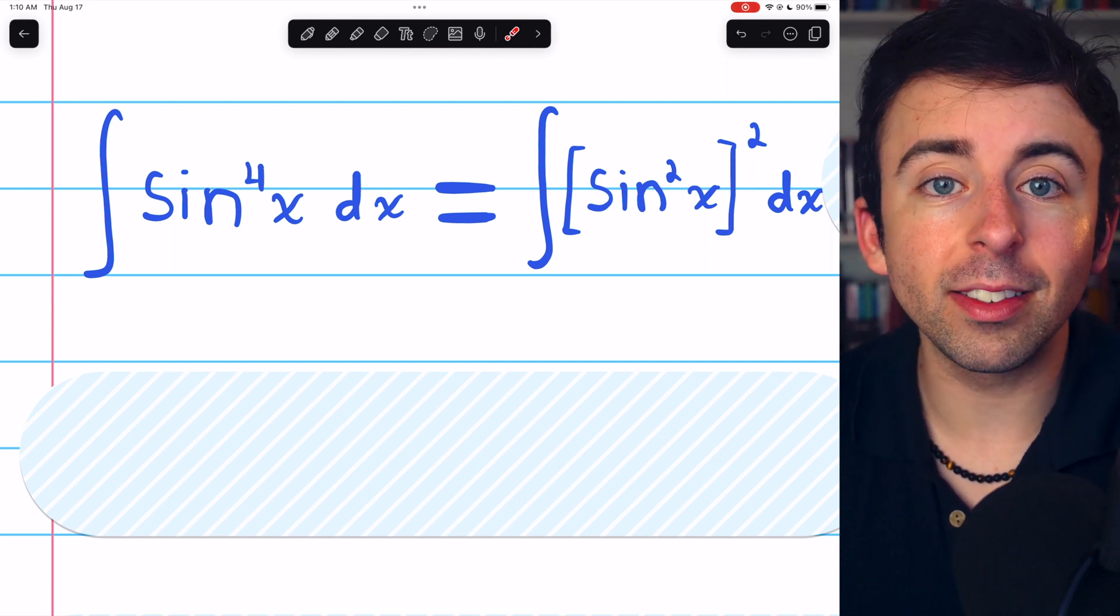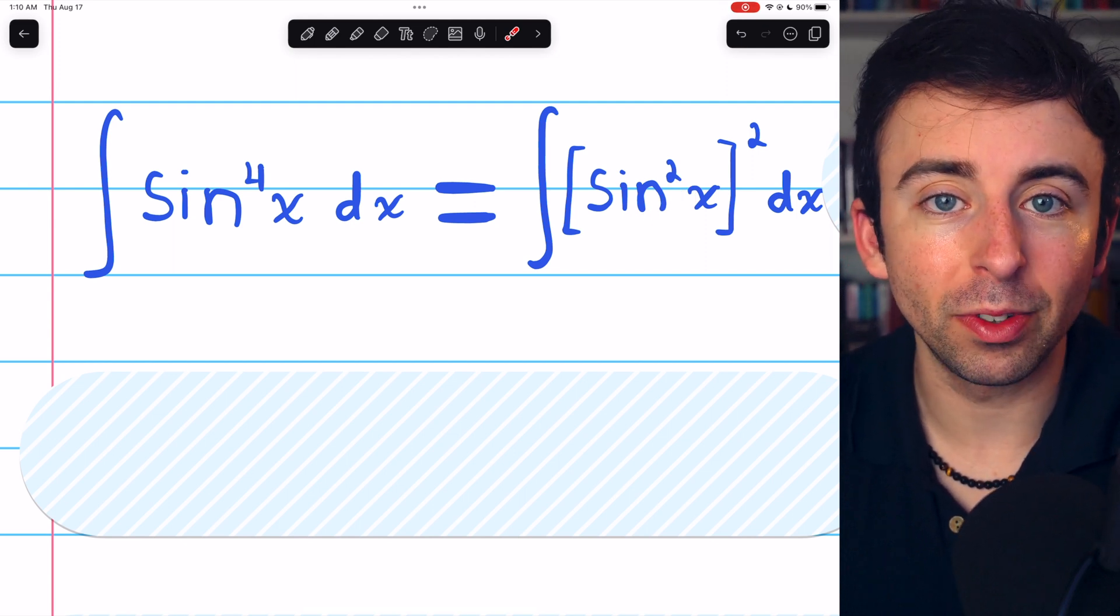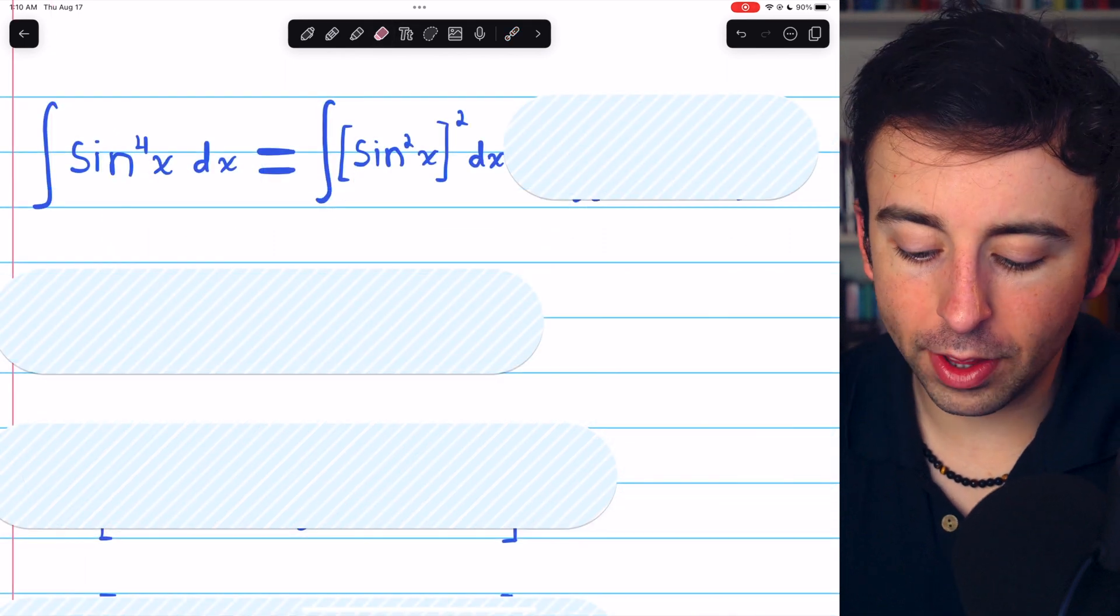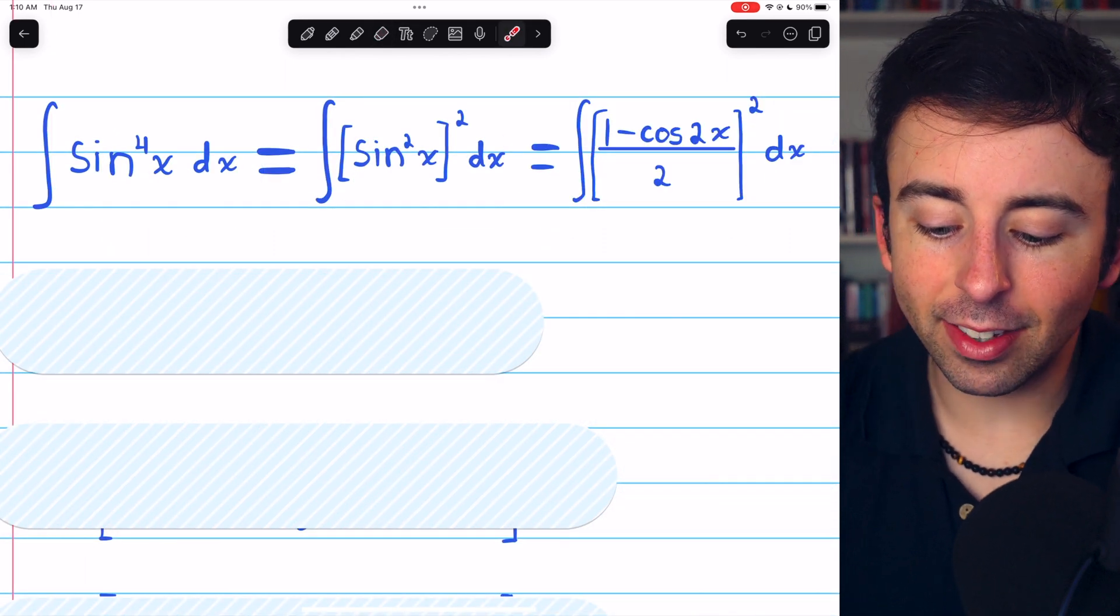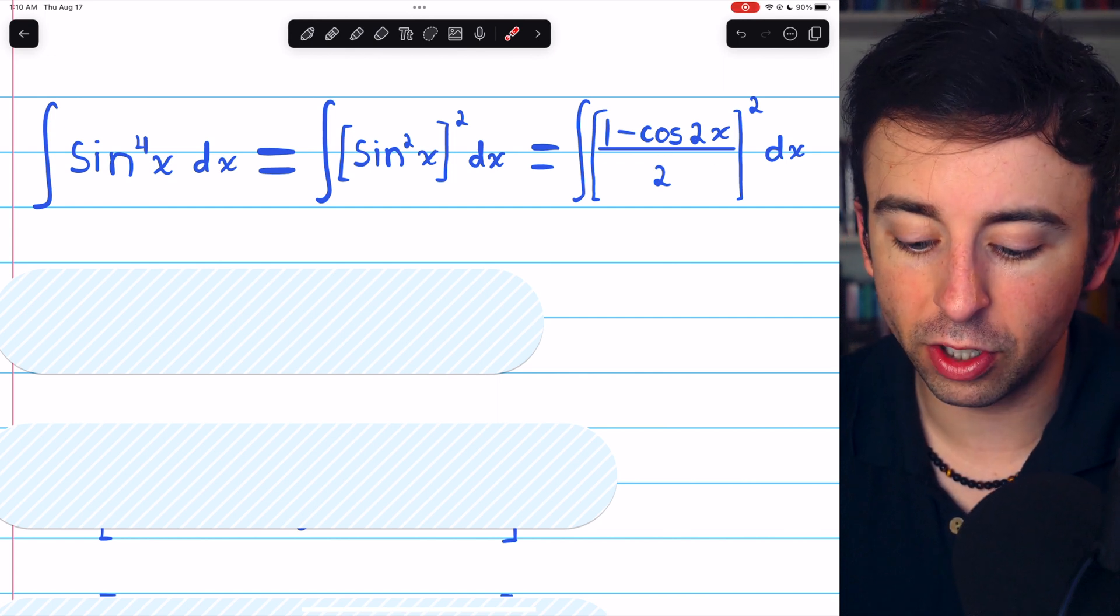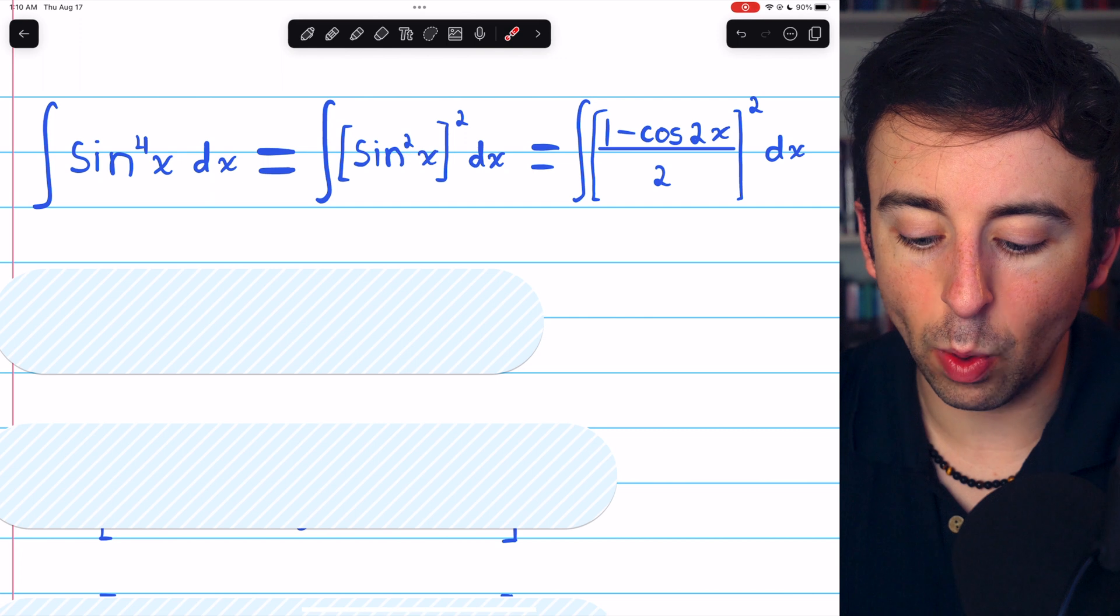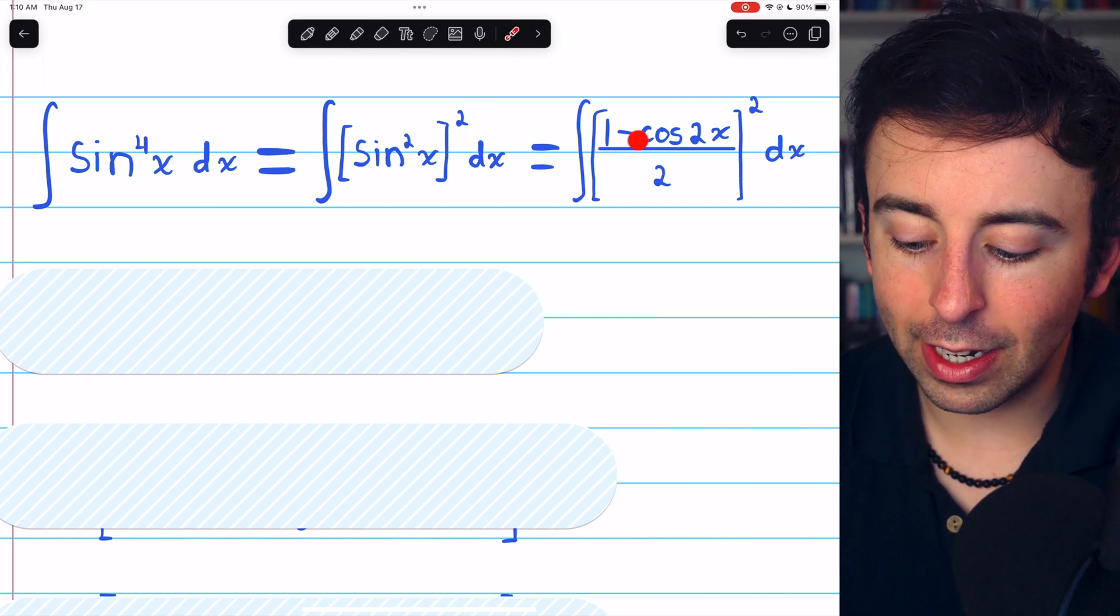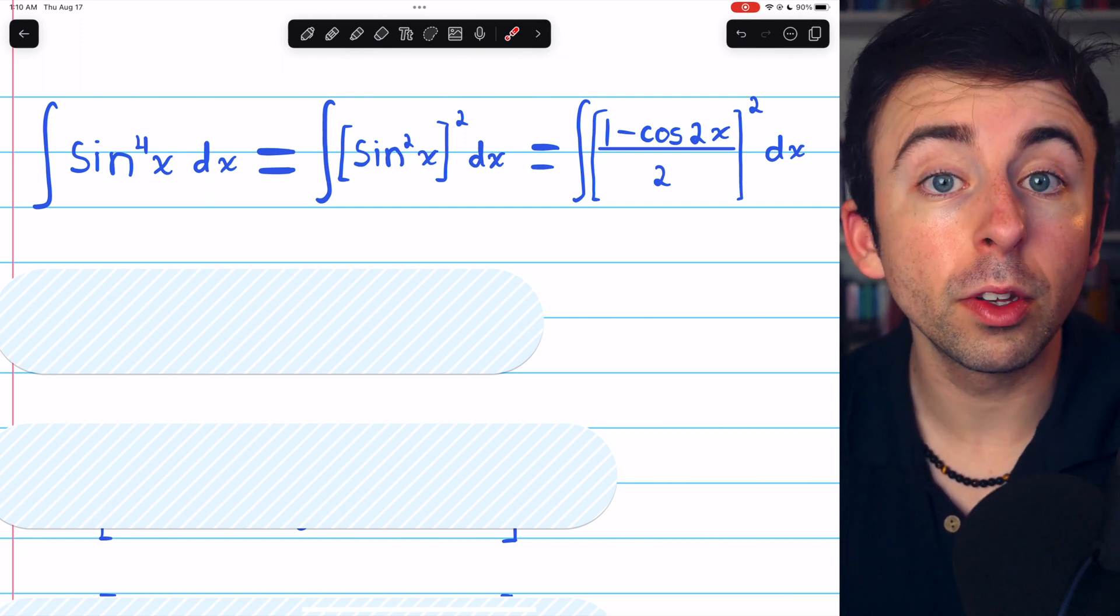This is useful because then we can apply some power-reducing identities. You may recall that sine squared is the same as 1 minus cosine of 2x over 2. So, sine squared squared is 1 minus cosine 2x over 2 squared.